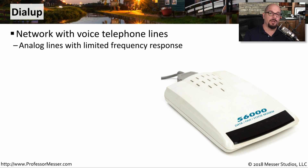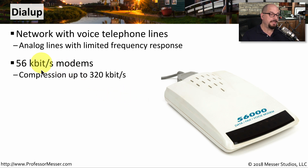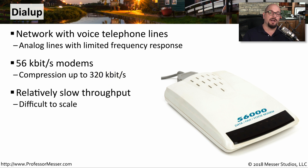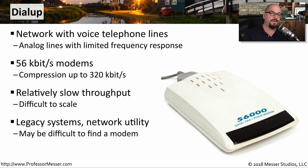In places where DSL or cable modem connections are not available, you can use existing voice telephone lines and connect a dial-up modem to send digital signals over analog voice communication lines. These dial-up modems communicate at 56 kilobits per second, and internally the modem can compress some data up to 320 kilobits per second. This is obviously a much slower transmission rate than DSL or cable modem, and it's difficult to scale — more connections require more phone lines and more modems. Today, dial-up modems are generally used in very specific use cases, such as when no other connection is available, or when only a small amount of data needs to be sent once a day.